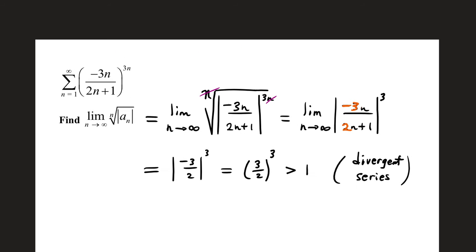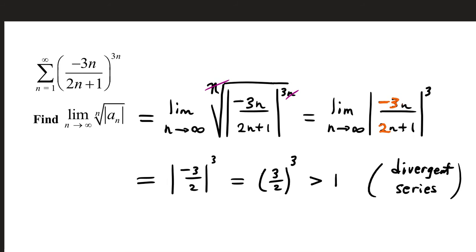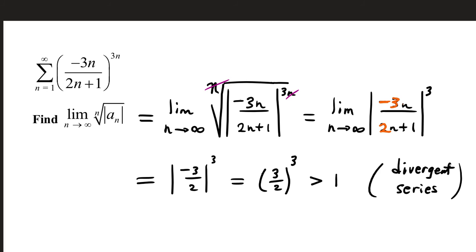And then our last example we did in class for root test. We have the sum from 1 to infinity of negative 3n over 2n plus 1 to the 3n power. Setting up our limit, we have limit as n goes to infinity of the nth root absolute value of our a sub n term.